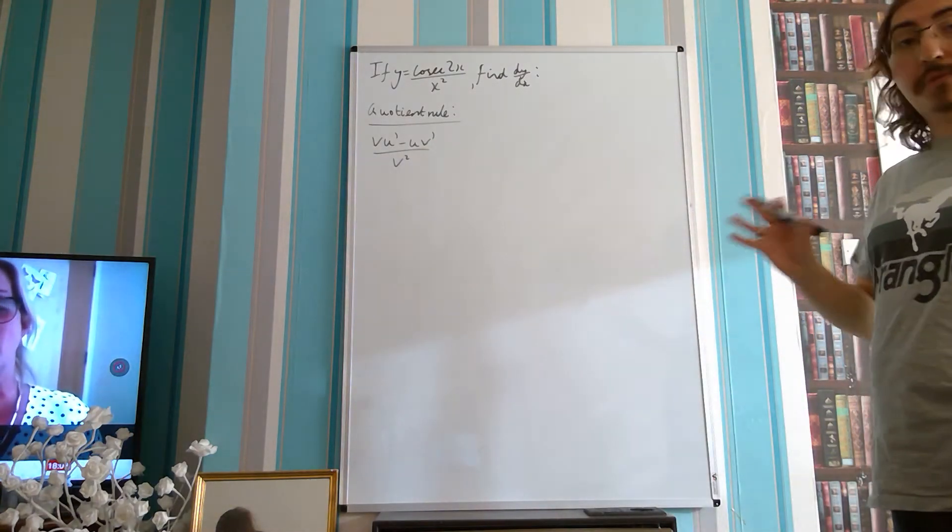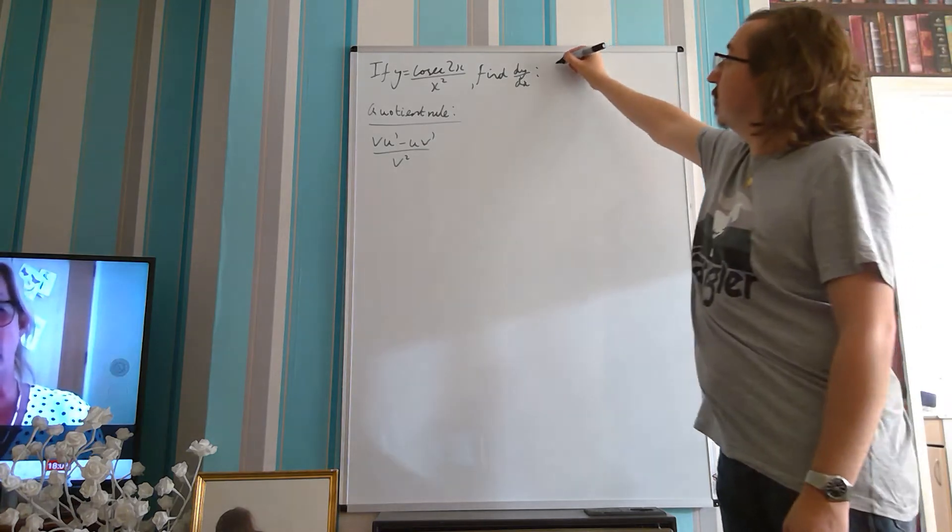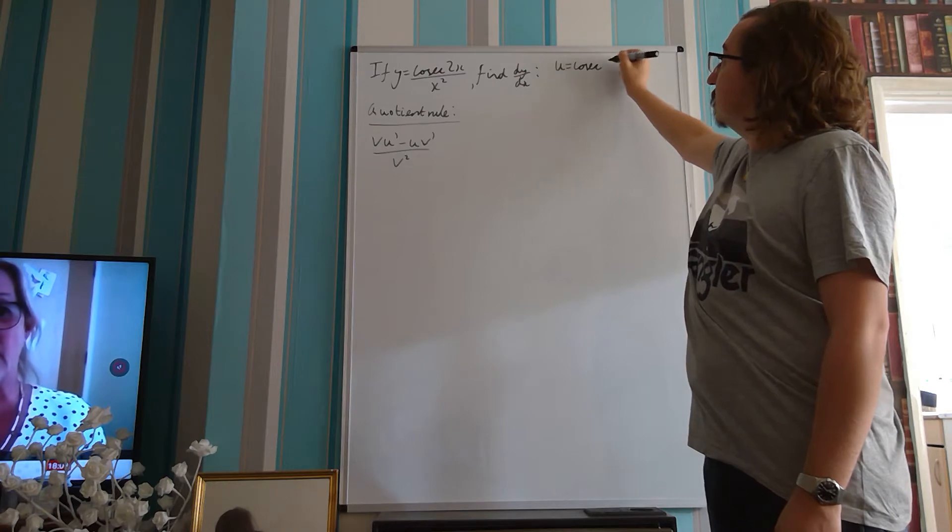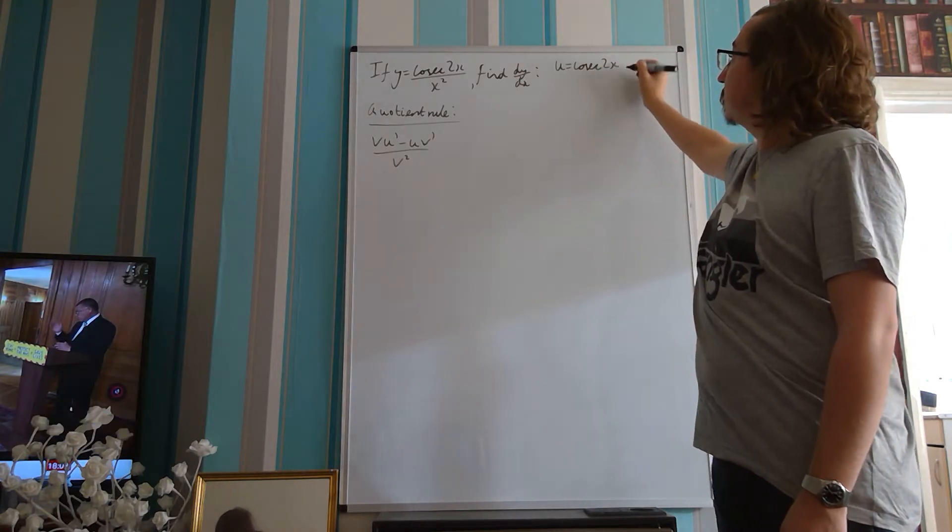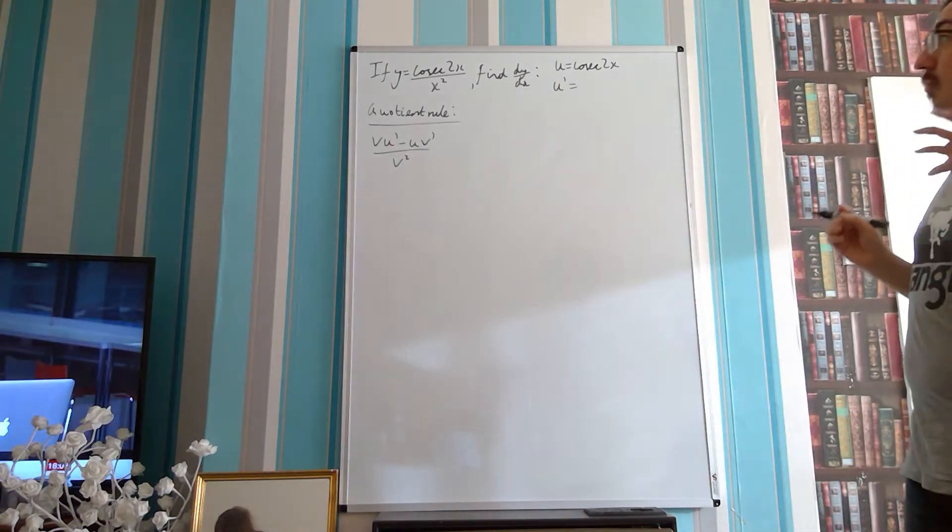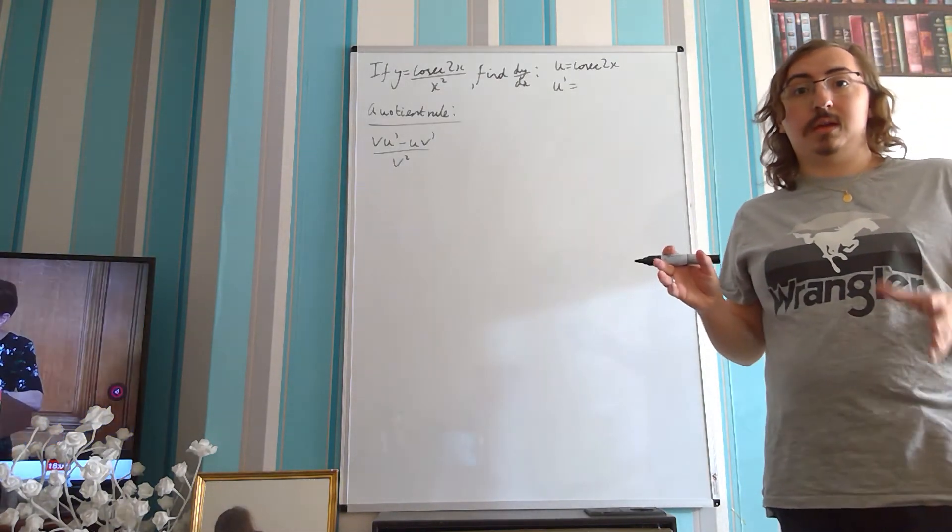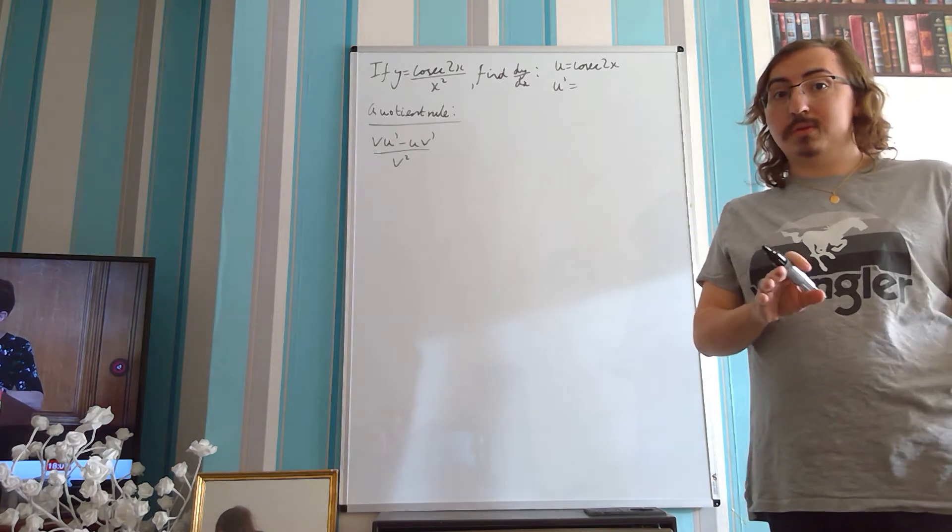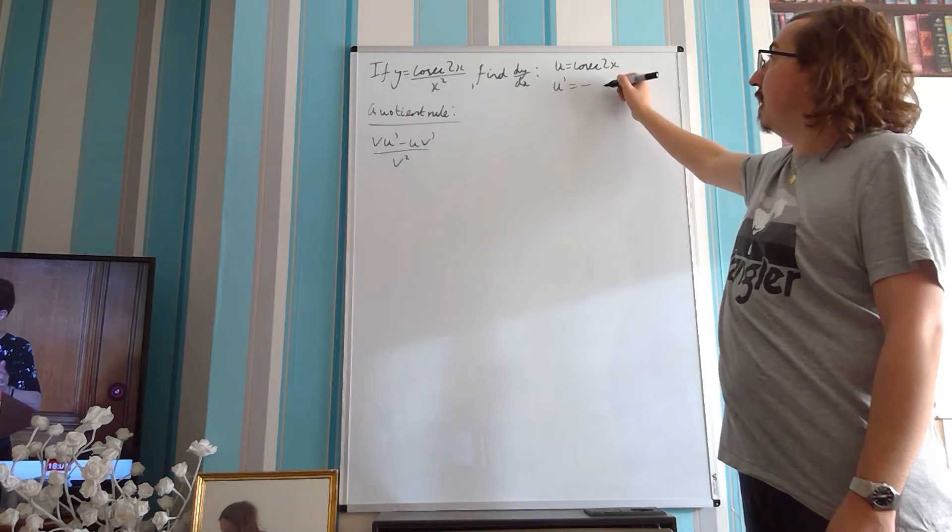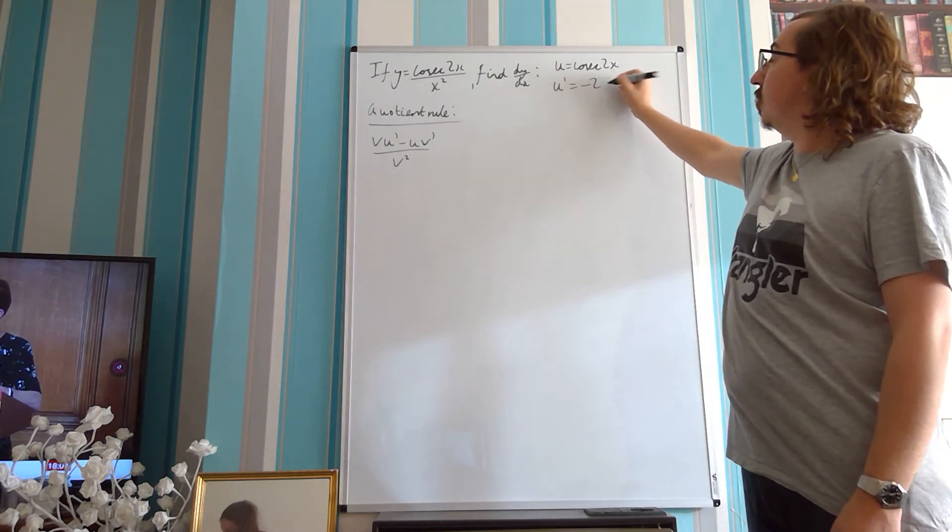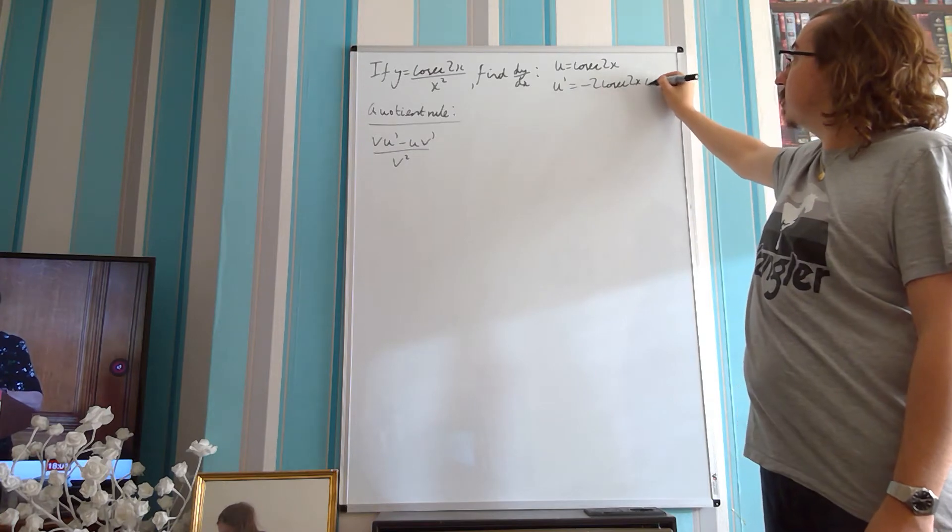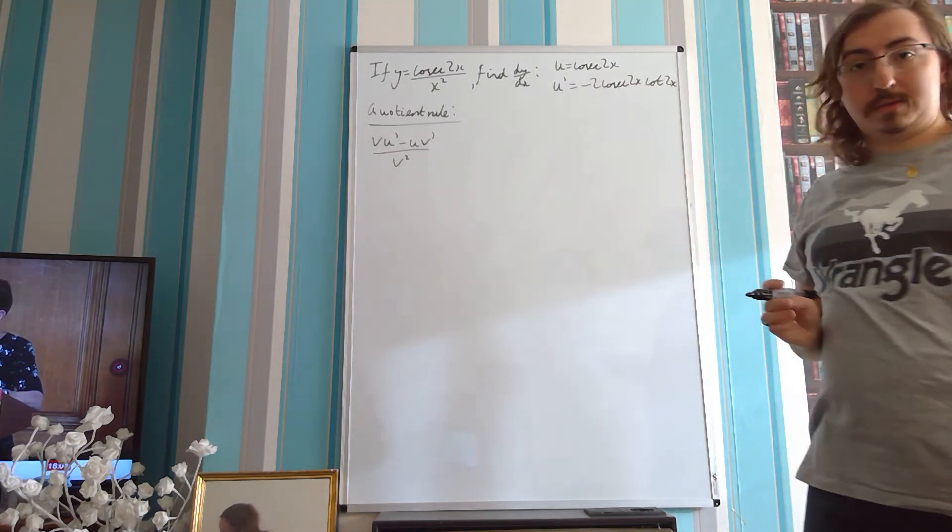So again, we need to get our four parts for this. We have our u, which is our numerator, which is cosec 2x, which we then need to differentiate. Now you should remember that the differential of cosec is given on the formula booklet as well. So the differential of cosec 2x is minus 2 cosec 2x cot 2x.